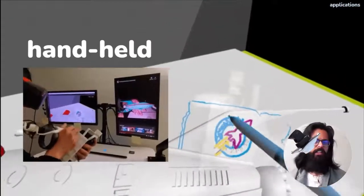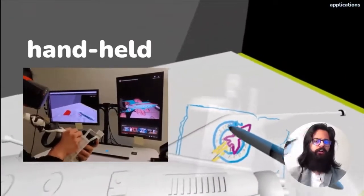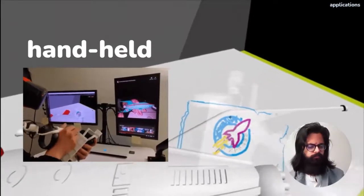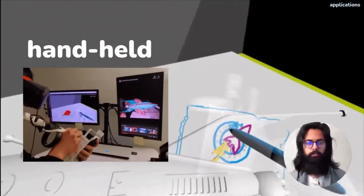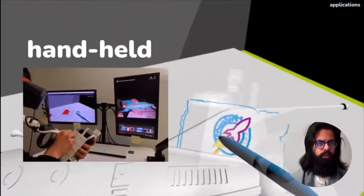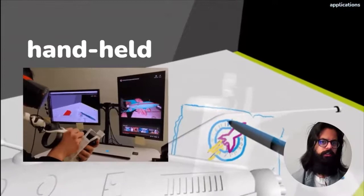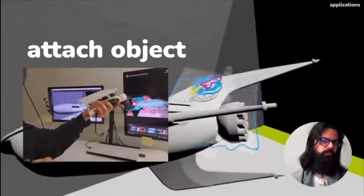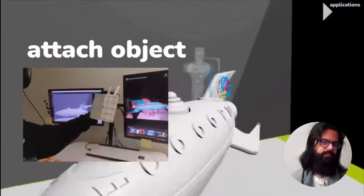Secondly, we have the handheld configuration, where the user can hold the controller in their hand, like a journal or notebook, and use the pen to jot down notes or sketches. In both of these cases, the user can attach the virtual object to the physical surface.